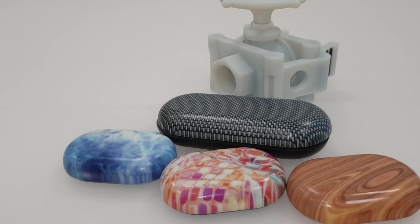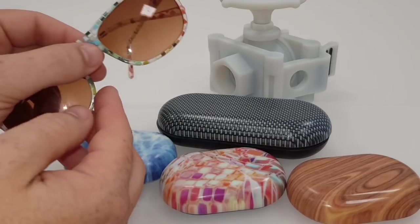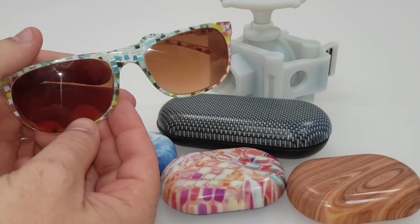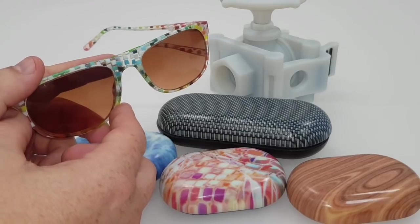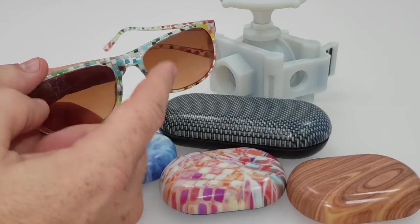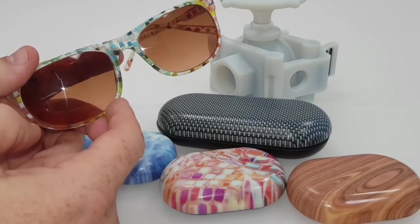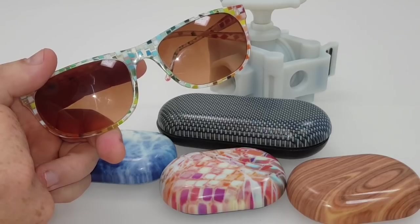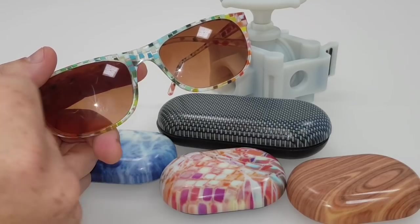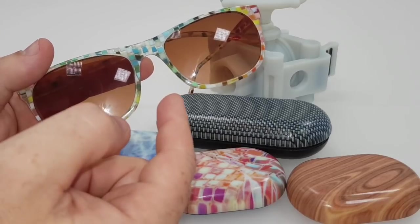That's something about the Stratasys J750 combining the color and the new Agilus material. And then thirdly, we have a new material called the VeroFlex, which is specifically created for the eyewear design and manufacturing market. These frames were created in the VeroFlex material. It's a range of six materials in all of the colors that you need to create full color multi-material frames, such as this one.